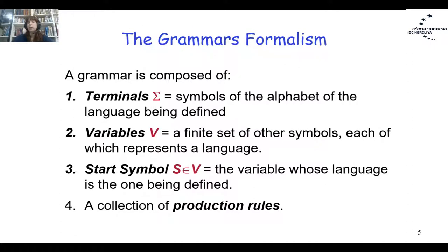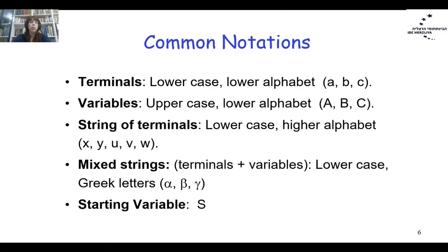For a formal definition of grammar, we have: a list of terminals (our alphabet), a finite set of variables V representing parts or structures of the language, a start symbol S belonging to V, and a collection of production rules. Common notation: terminal symbols use lowercase letters a, b, c or digits 0, 1; variables use uppercase letters A, B, C; strings of terminals use lowercase letters w, v, u, x, y.